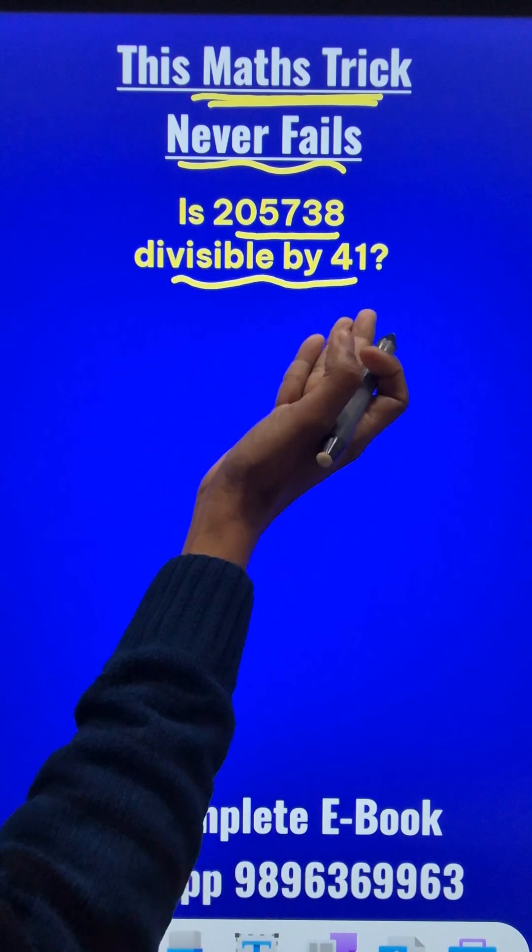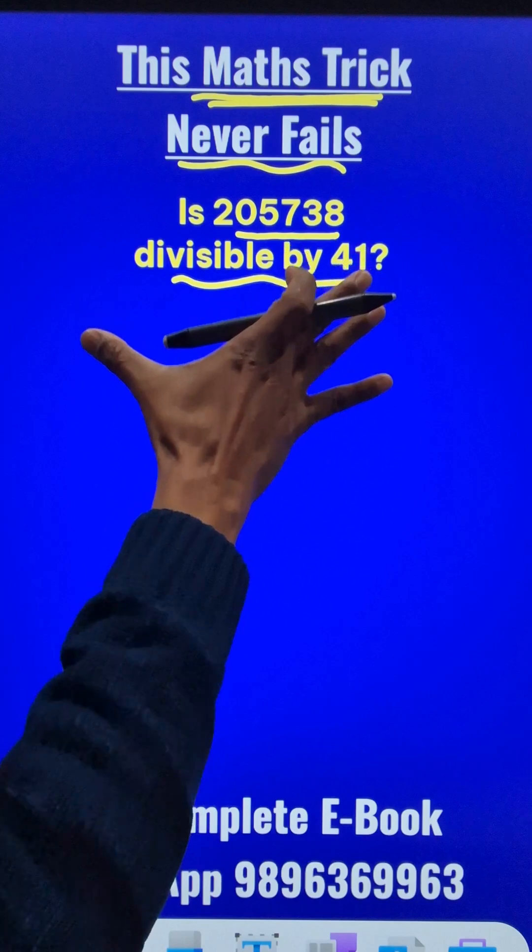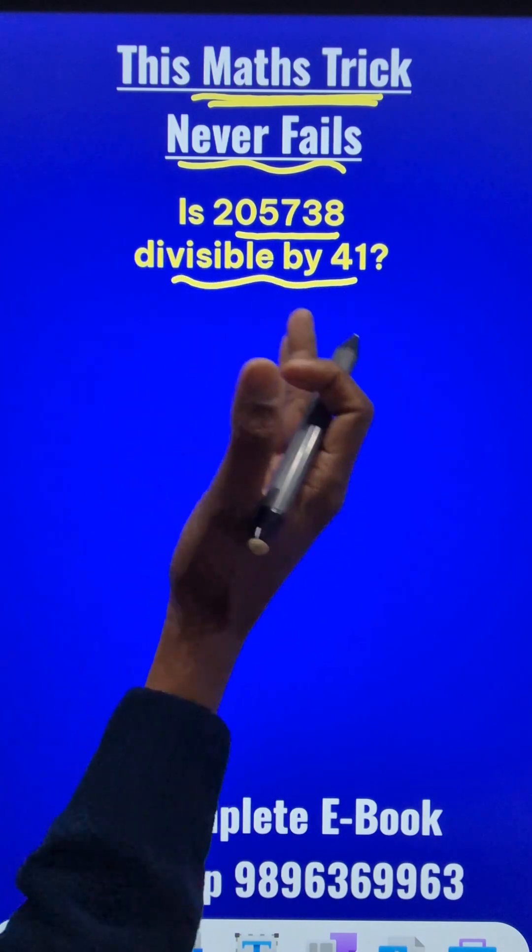So you need to know 41 times table or you will take a lot of time when you do the long division, right? How about using a short trick?